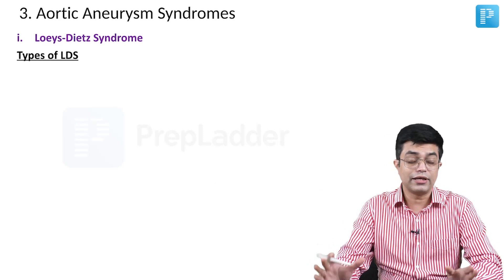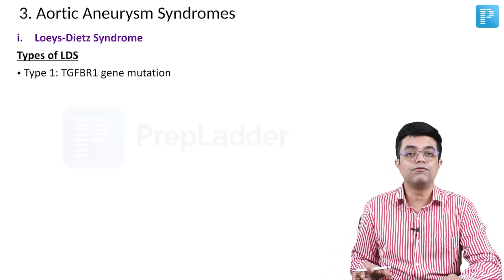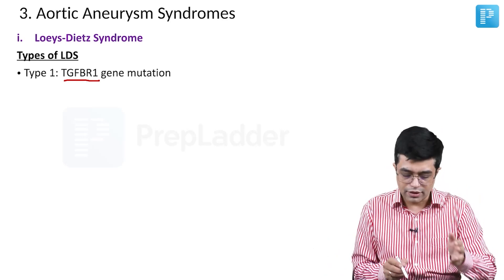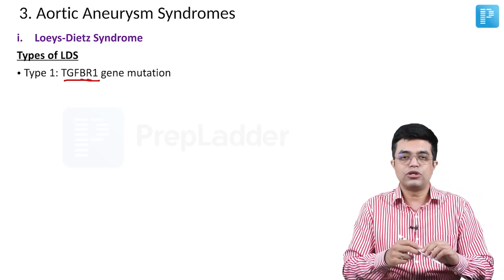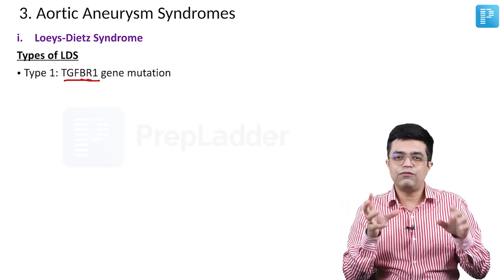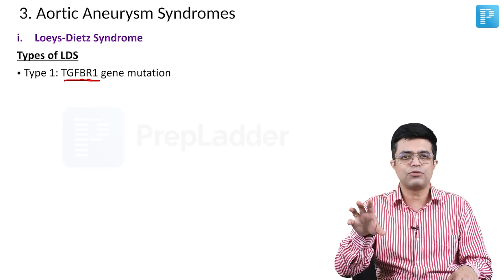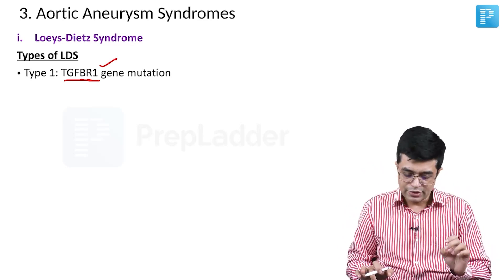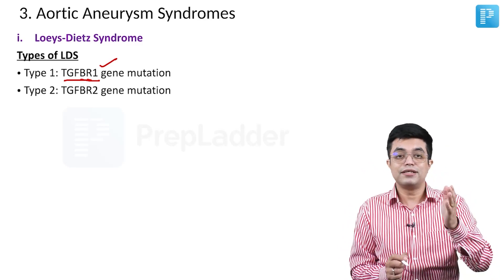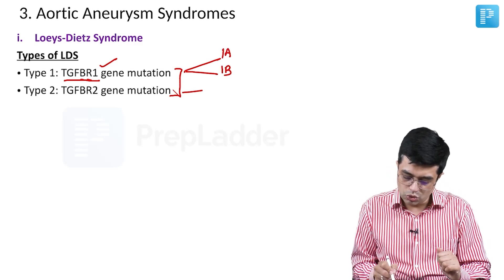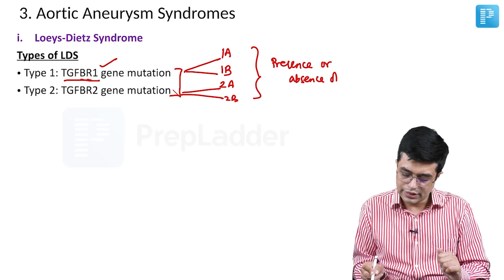There are five subtypes of Loeys-Dietz syndrome. Type 1 has TGFBR1 gene mutation — TGF stands for transforming growth factor, B for beta, R for receptor. Type 2 has TGFBR2 gene mutation. Both type 1 and type 2 are further divided into 1a/1b and 2a/2b depending upon presence or absence of craniofacial features.